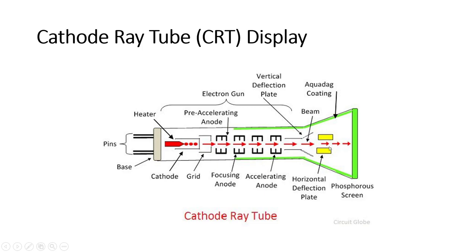The vertical deflection plate causes the electron beam to deviate either upwards or downwards, while the horizontal deflection plate makes it deviate left or right. Together they allow the beam to be targeted to any point on the screen. The front part of the CRT is called the face plate, and the internal surface of the face plate is coated with phosphor which glows when it is struck by the beam.